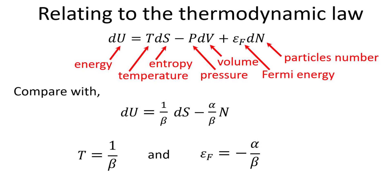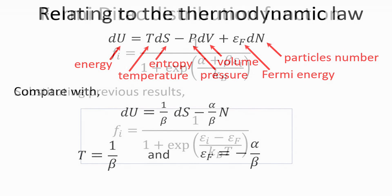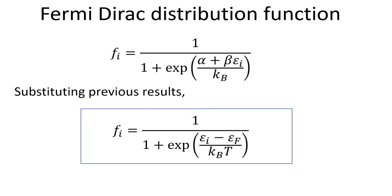We recall the well-known thermodynamics law. A quick comparison to our microscopic expression of the total energy differential to the thermodynamics law allows us to relate temperature T to 1 over beta, and the Fermi energy to the minus of alpha divided by beta. With this, we can easily determine beta to be 1 over temperature T, and alpha to be minus the Fermi energy divided by T. This then allows us to arrive at the final expression of the Fermi-Dirac distribution function.